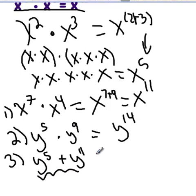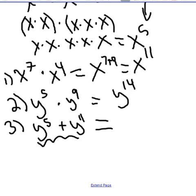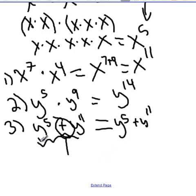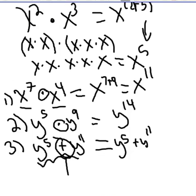Then we have y to the fifth plus y to the eleventh. Unfortunately, there's nothing we can do here. Our rule applies when we are multiplying. If you're adding, there's nothing you can do — you just have to rewrite it. y to the fifth plus y to the eleventh cannot be simplified. I included this example so you're aware that we must be multiplying like bases. You must have a multiply symbol and like bases — here we had x to the second and x to the third, a like base of x, multiplying them, so it's just x to the two plus three.